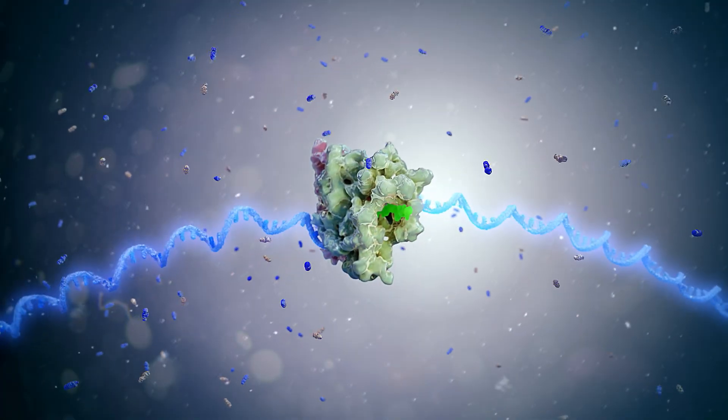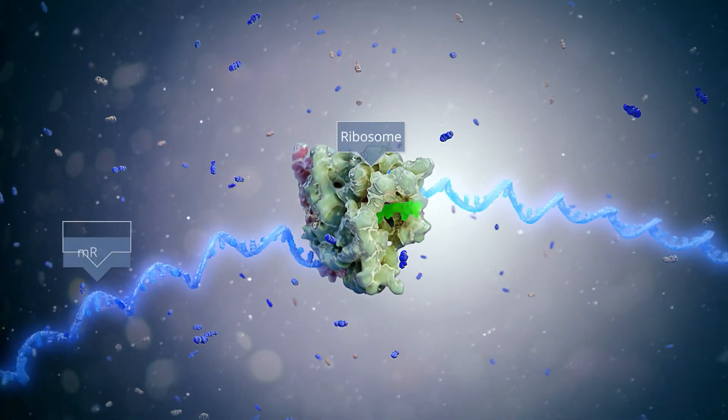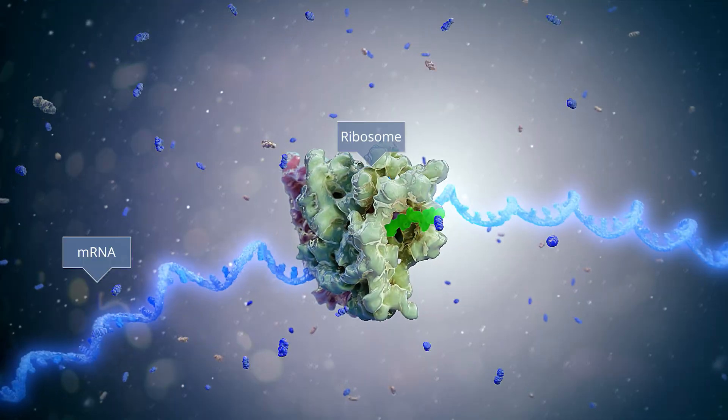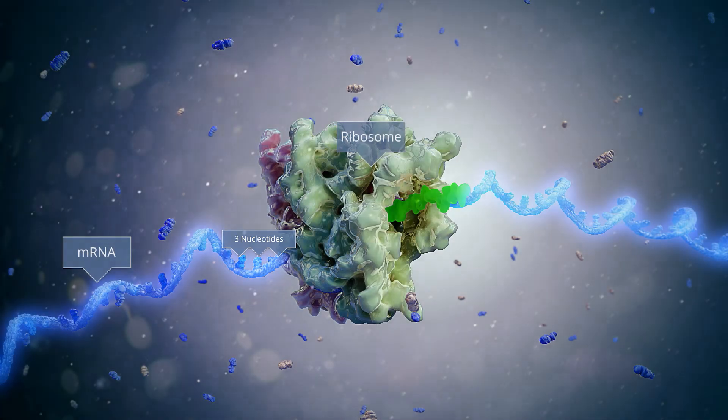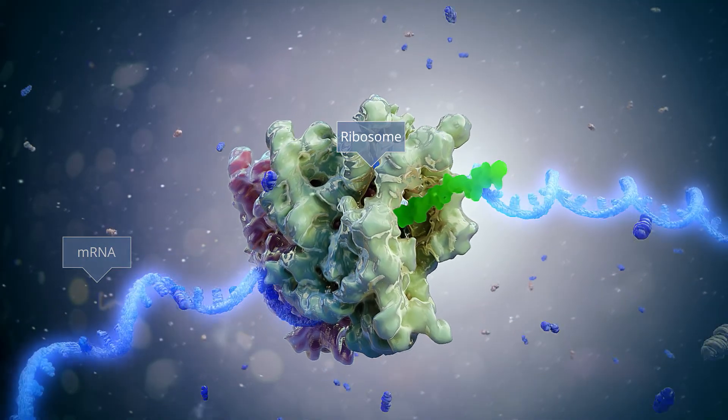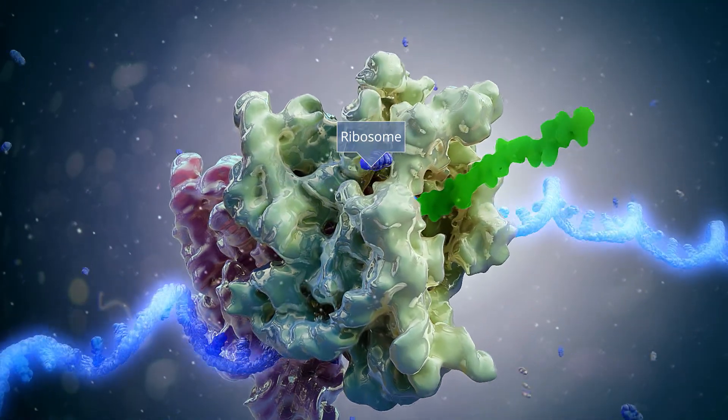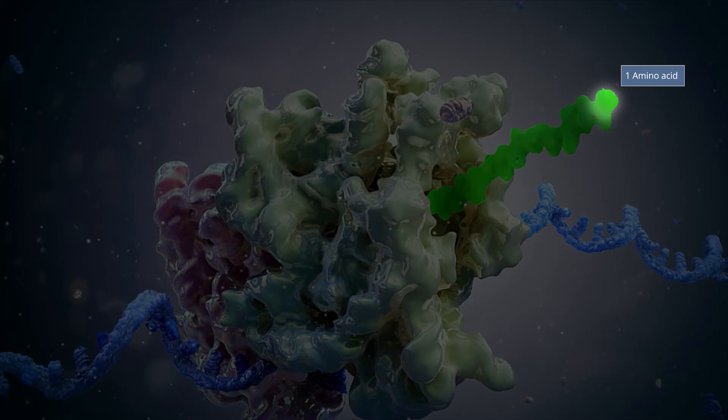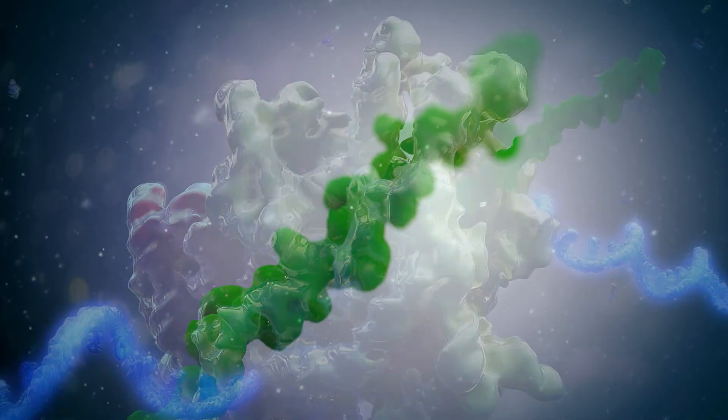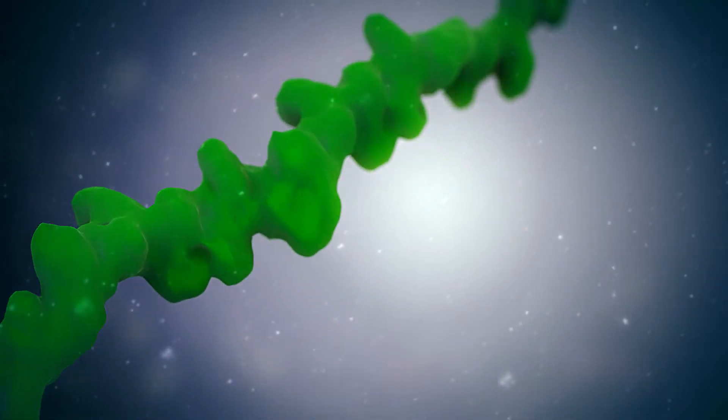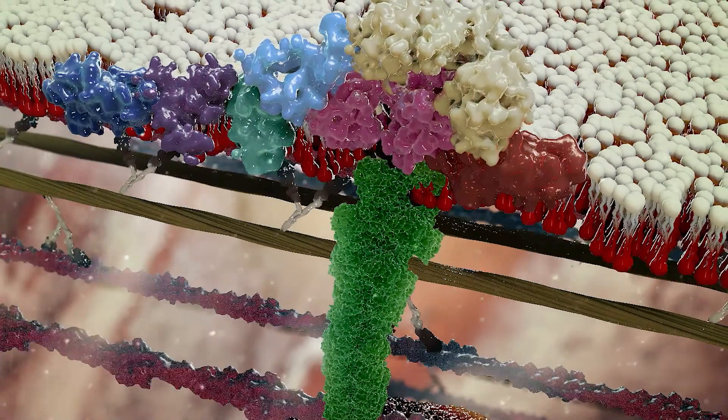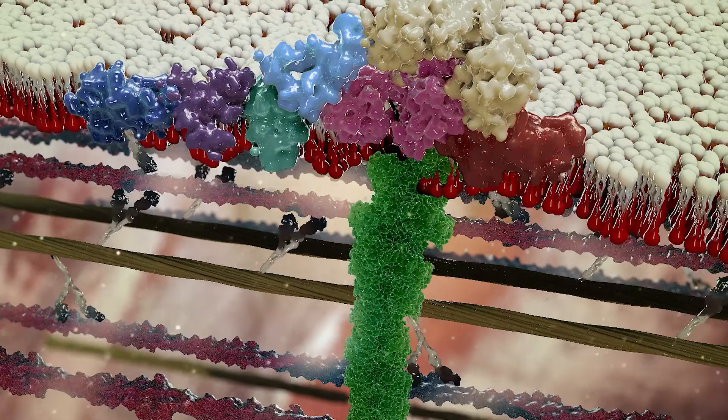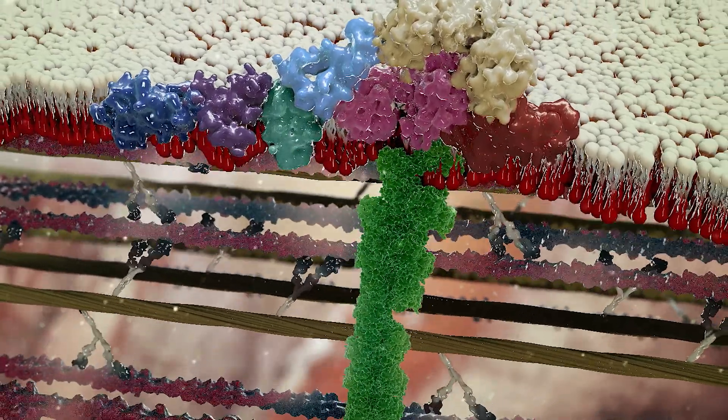The dystrophin mRNA is translated by the ribosome using a reading frame that reads the mRNA three nucleotides at a time. Each three nucleotide sequence is called a codon, and each codon is translated into one amino acid. Amino acids are attached to the growing protein. Incorporation of the correct sequence of amino acids is essential to creating a properly folded functional protein.